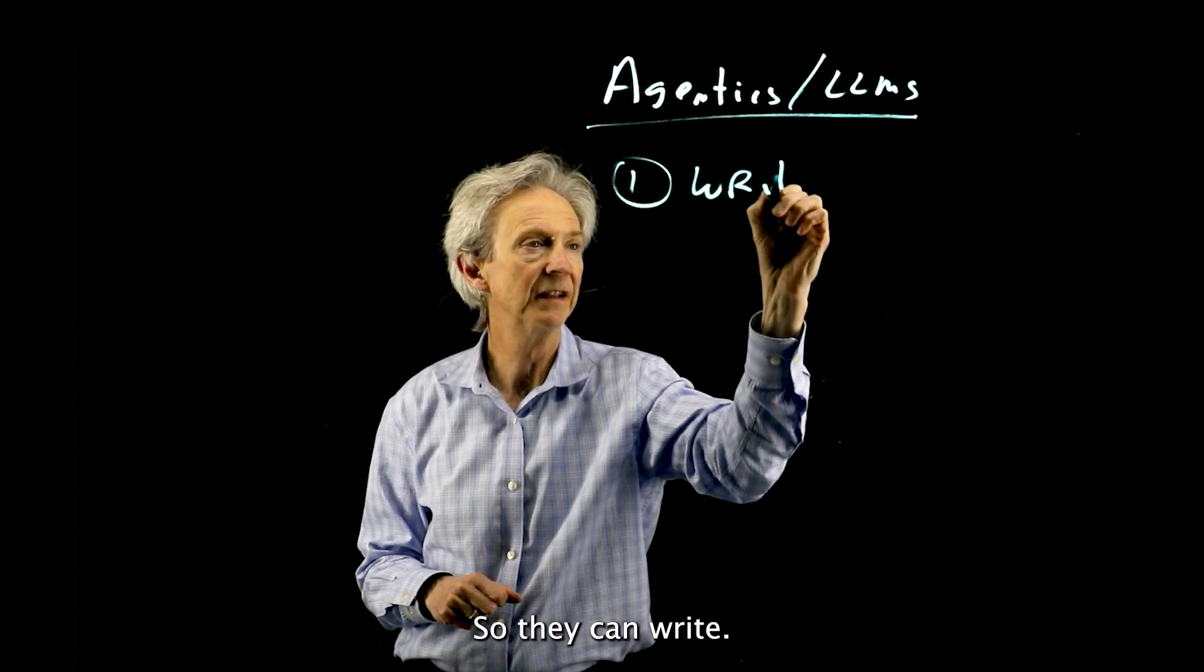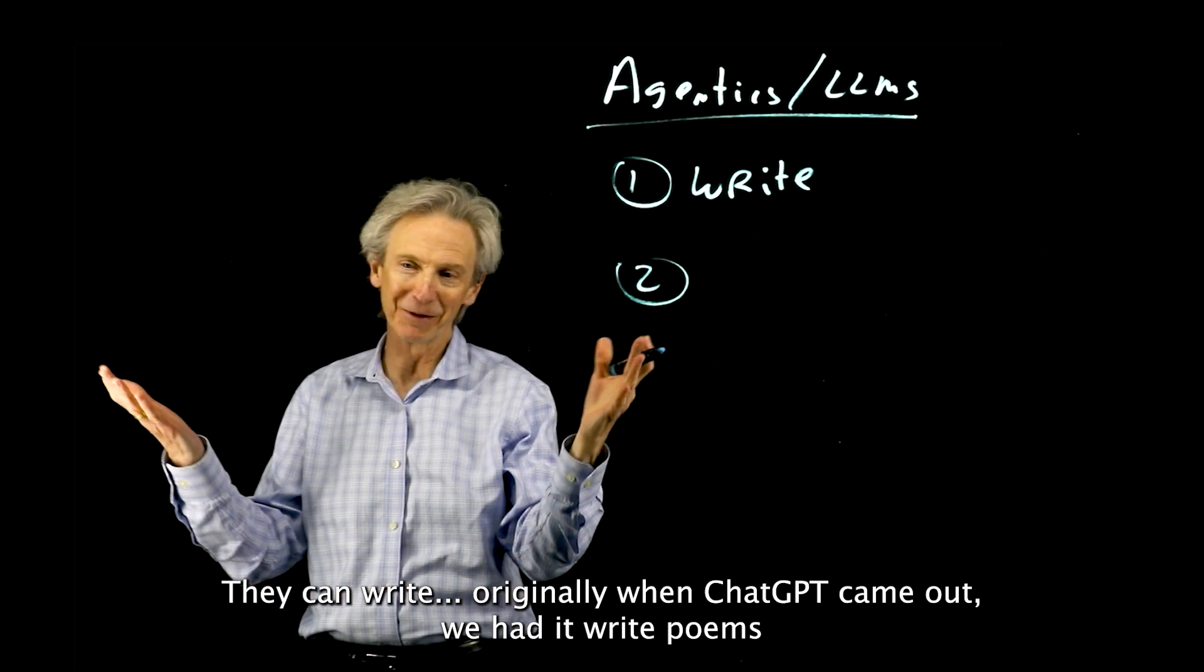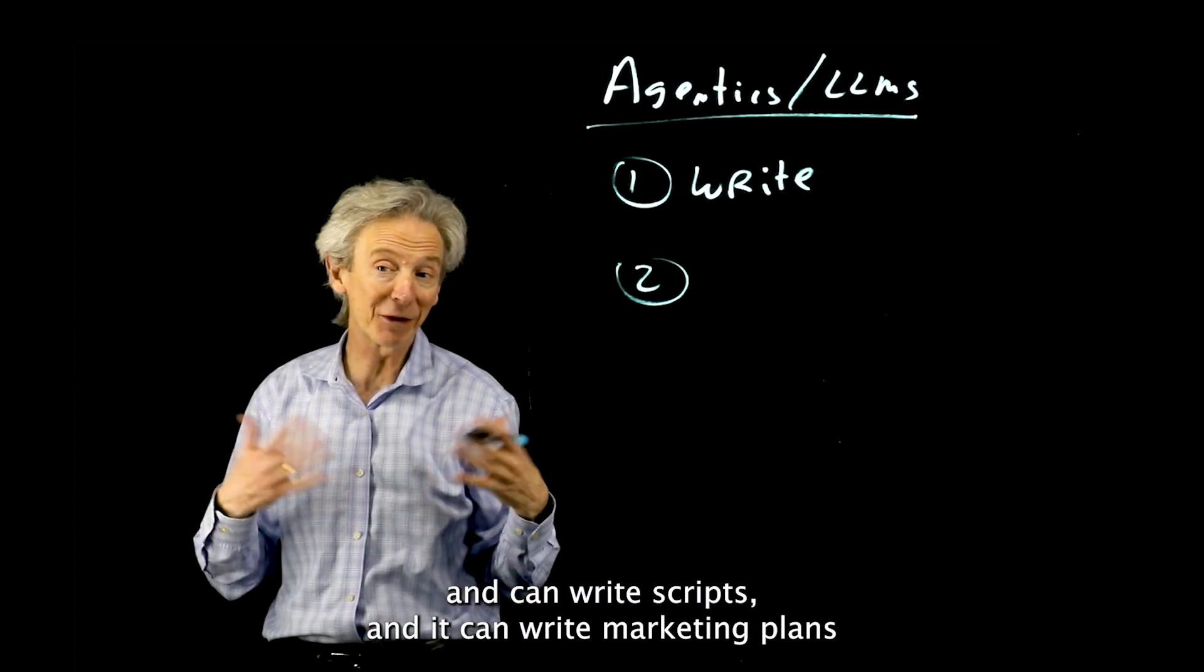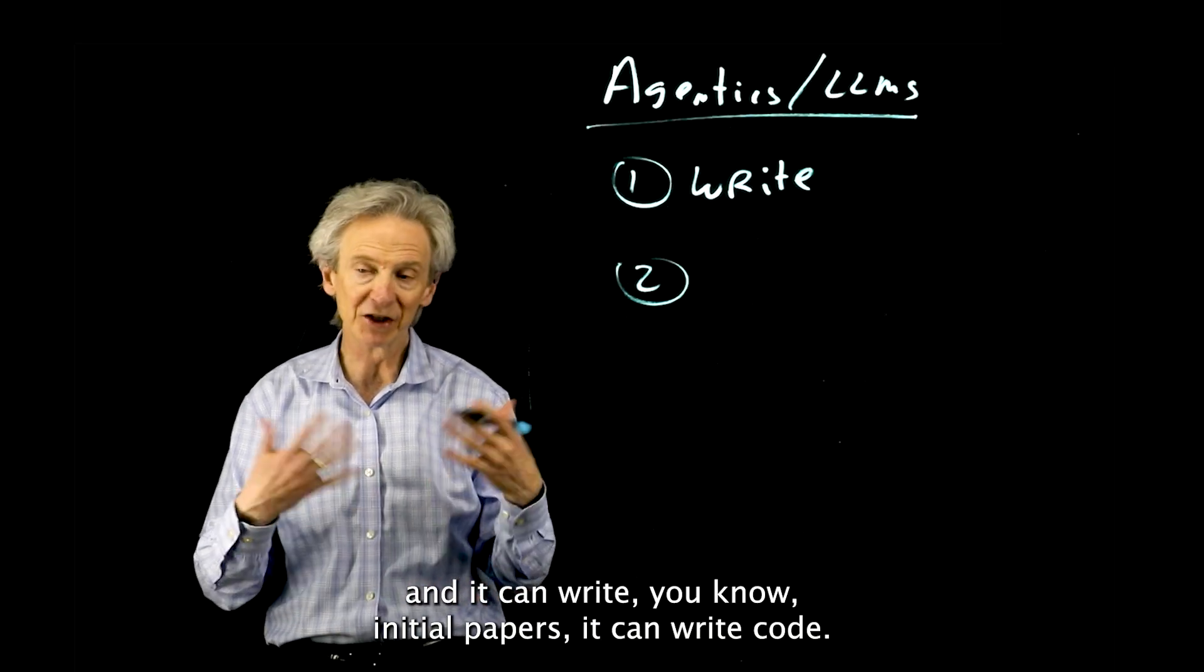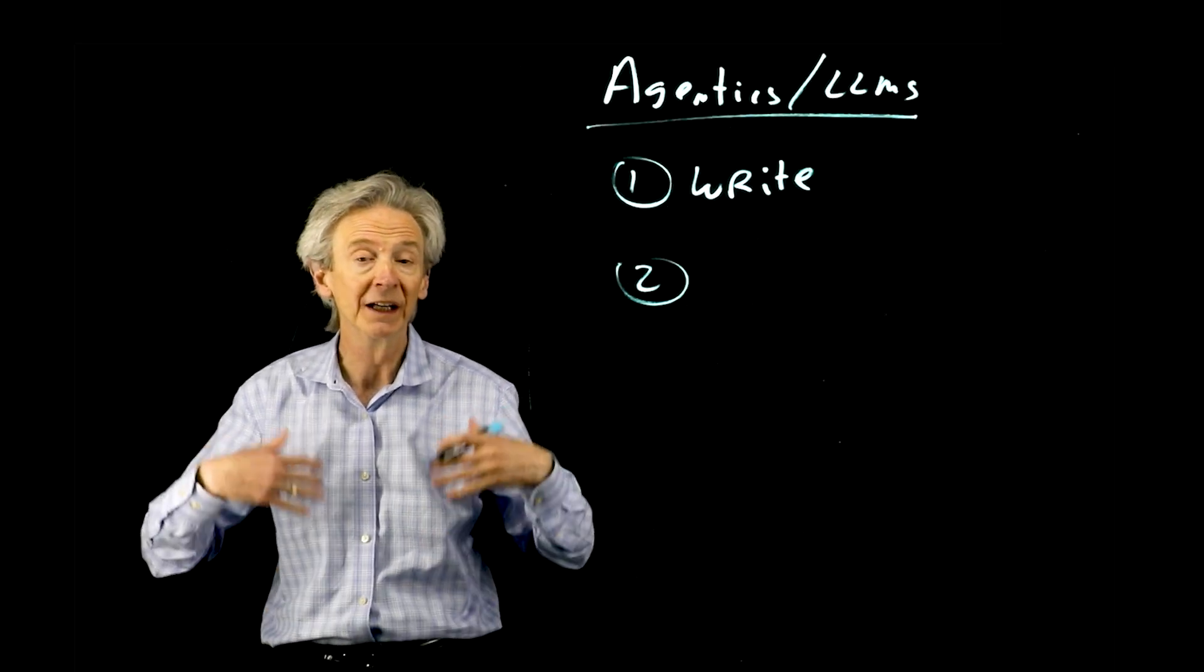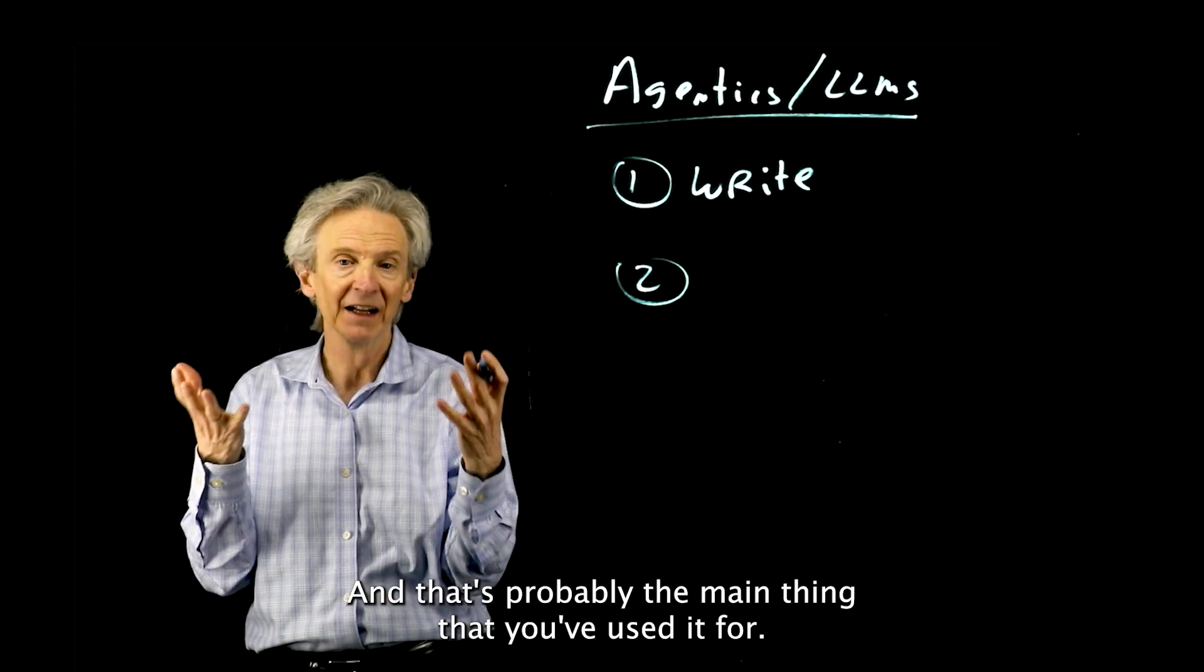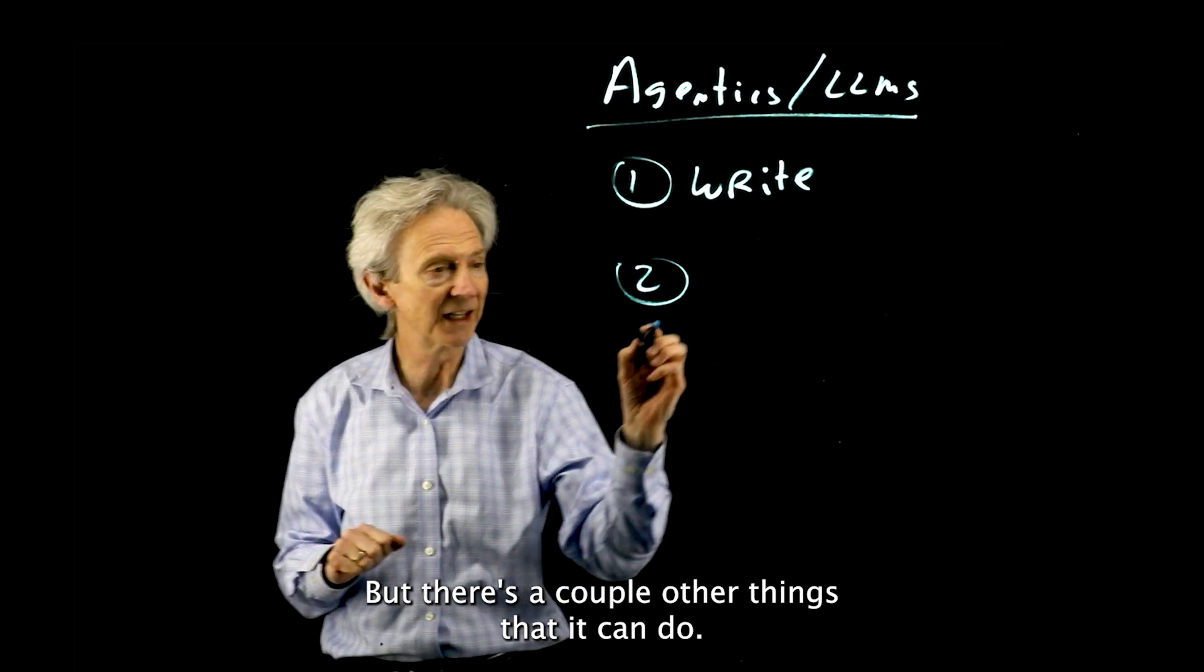Agents and LLMs can do a number of things, only one of which you've probably done. They can write. Originally when ChatGPT came out we had it write back poems, scripts, marketing plans, initial papers, and code. It does a lot of writing and that's probably the main thing that you've used it for, that everybody uses it for.